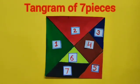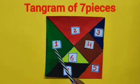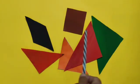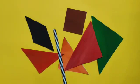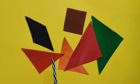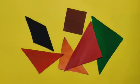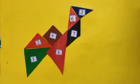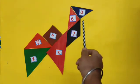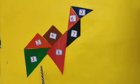This is a tangram of 7 pieces. Let's make different figures with these different shapes. What does this figure look like? It looks like a bird.